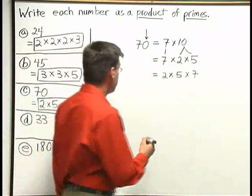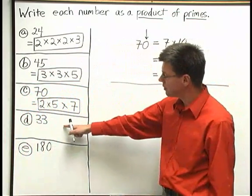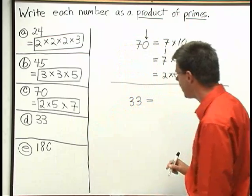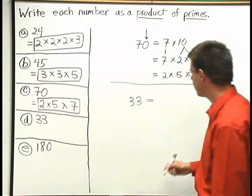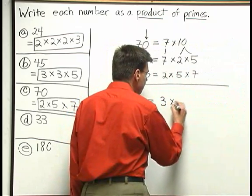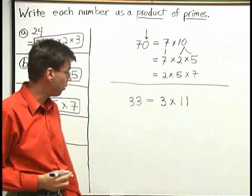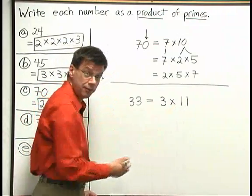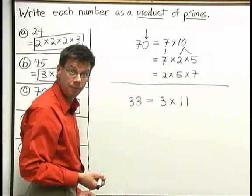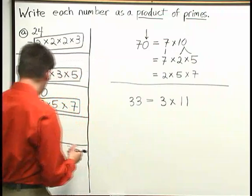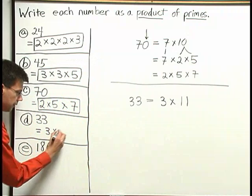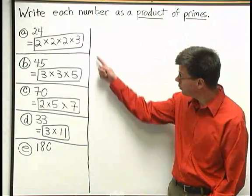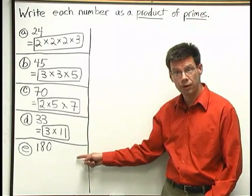Now let's work on 33. From my multiplication facts, 33 is 3 times 11. We've already talked about how 3 is prime. And 11 — can I break that down? Only as 1 times 11 or 11 times 1, so 11 is also a prime number. In just one step we got 33 written as a product of primes: 33 is 3 times 11.